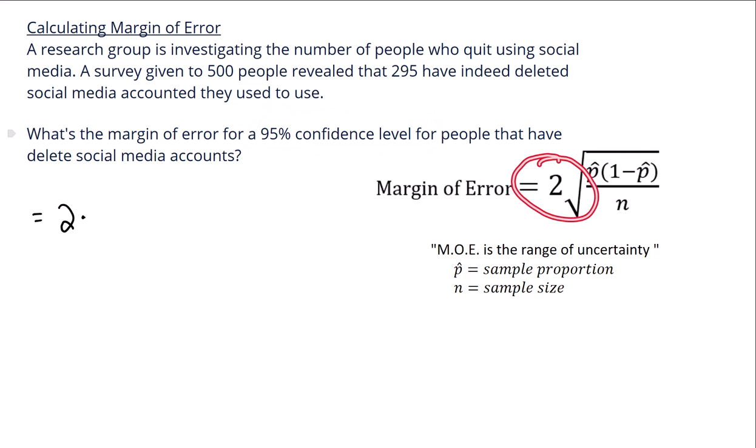So that 2, again, is connected to the 95% of the data that is under that curve of the normal distribution. Now, you might see, instead of this 2, 1.96 occasionally, but to make things easier, we're just going to stick with the 2.